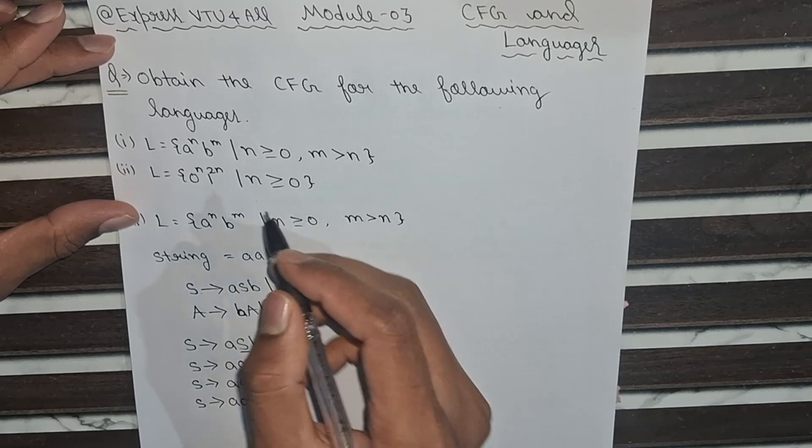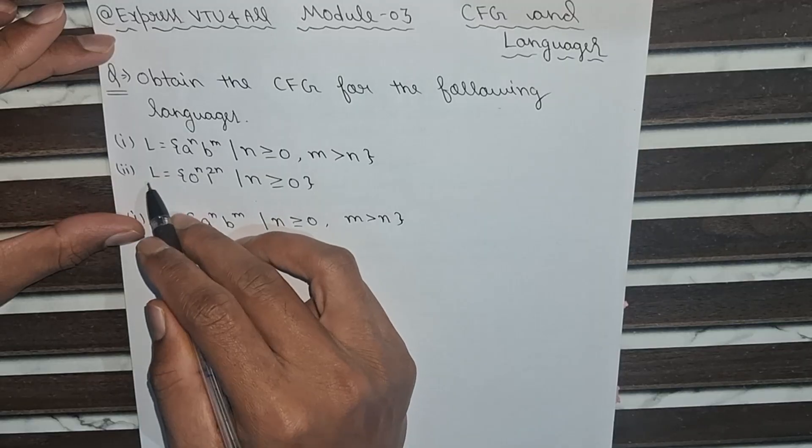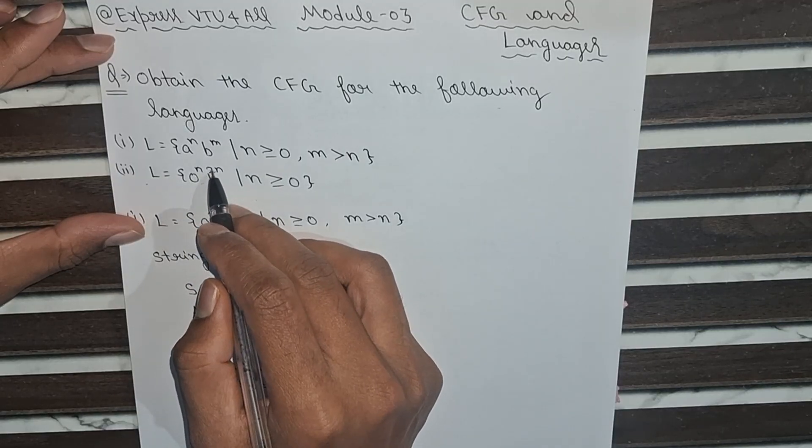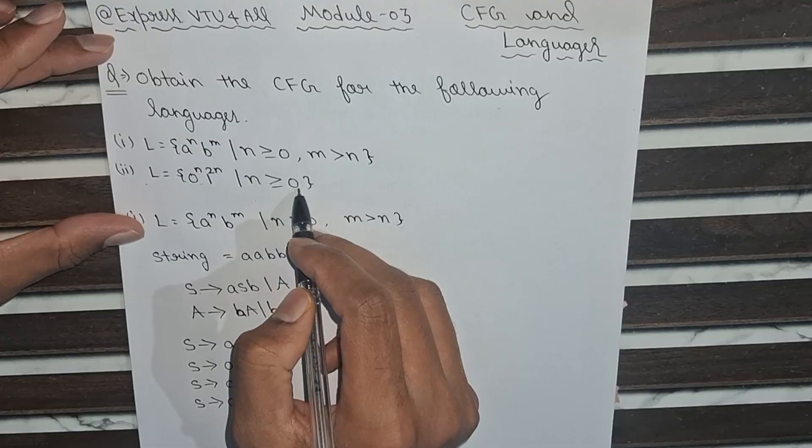Context-free grammar. Now we will move to our second part, which is L equals 0 to the power n and 1 to the power 2n, where n is greater than or equal to 0.